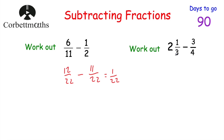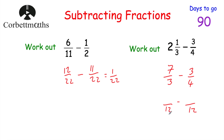The next question is to work out two and a third subtract three quarters. We would make this a top-heavy fraction: two times three is six, plus one is seven, so that's seven thirds. Then we subtract three quarters. We want a common denominator — I'm thinking 12 and 12. To get from three to twelve we multiply by four, so seven times four is 28. To get from four to twelve we multiply by three, so three times three is nine. So we've got 28 twelfths take away nine twelfths. Twenty-eight take away nine is 19, so that's 19 twelfths.